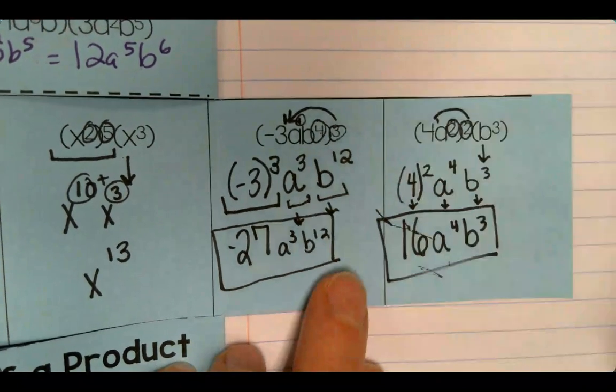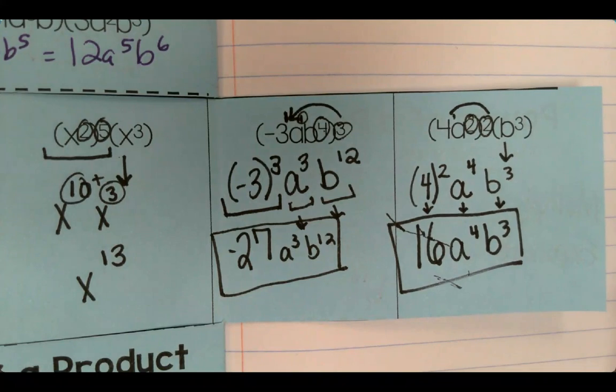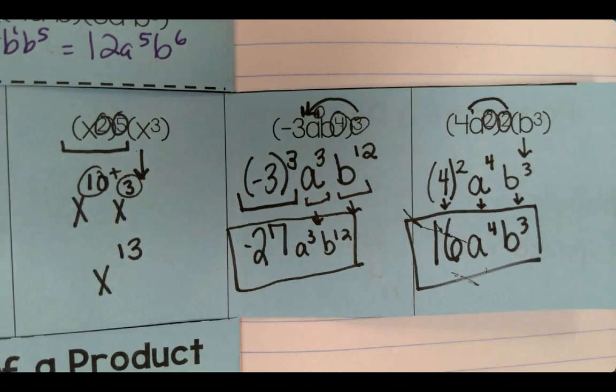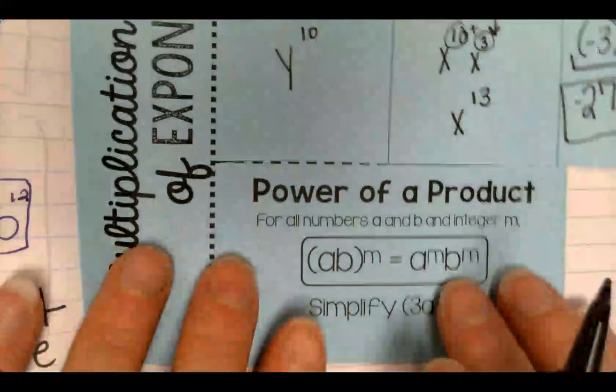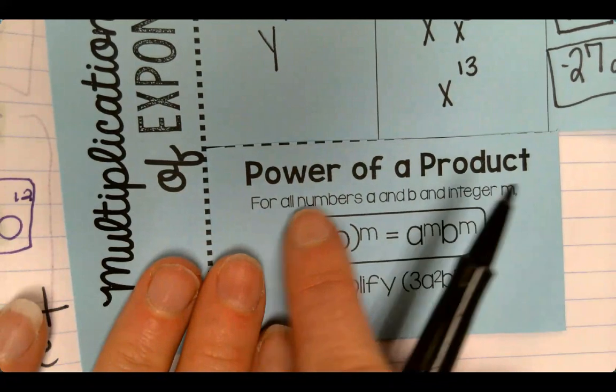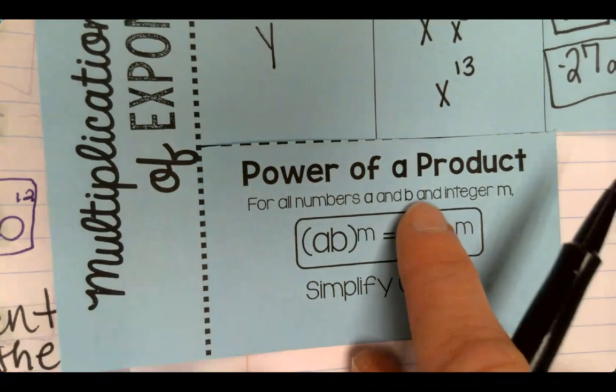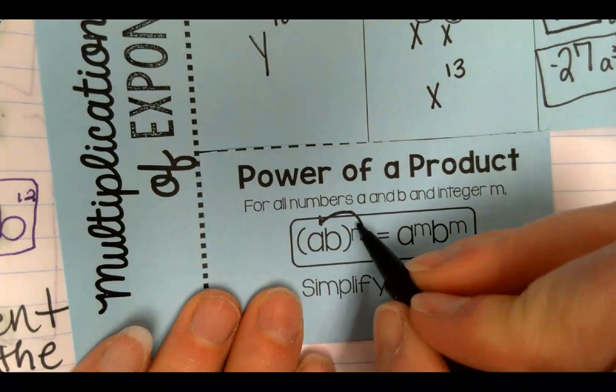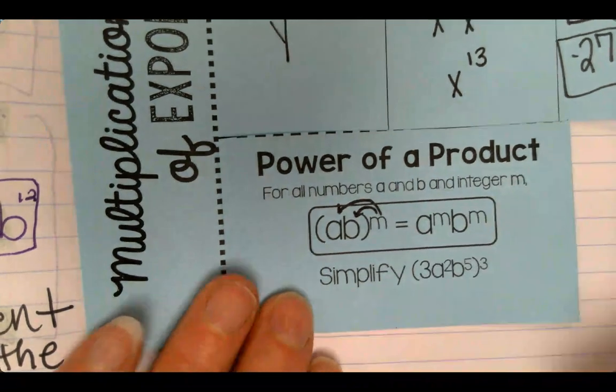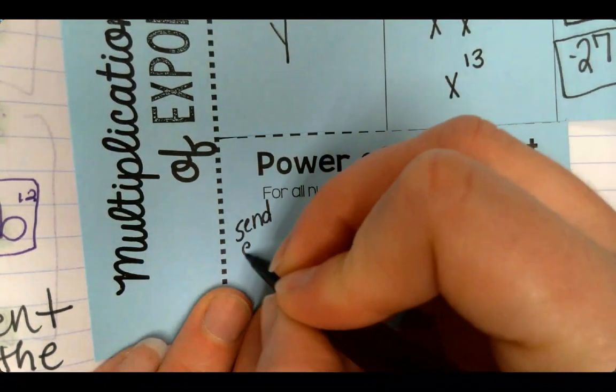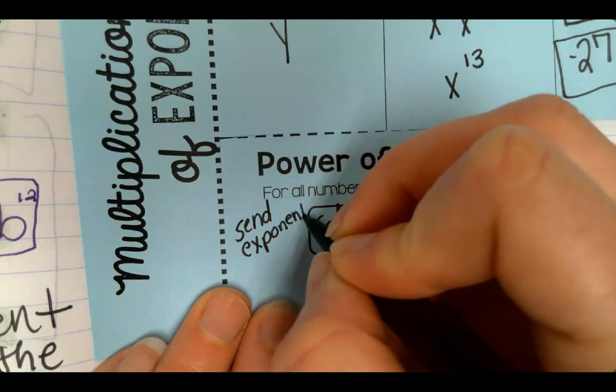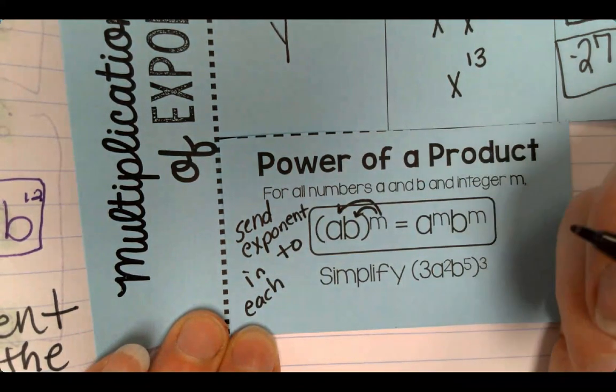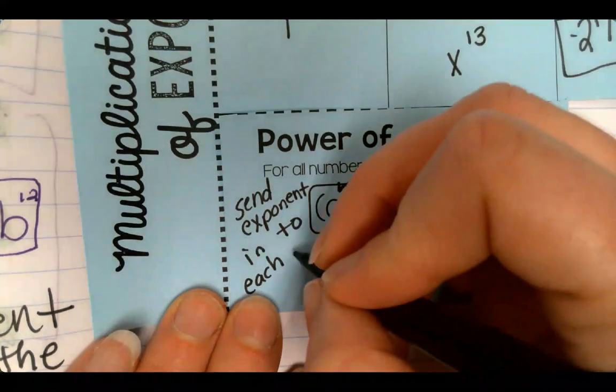Sorry about my messy foldable. All right. So it's going to get a little bit more challenging. Y'all ready for this? Ready or not. Let's go. Power of a product. For all numbers a and b and integer m, what we're going to do is we're going to send the exponent in. So put that send exponent in to each number or variable.